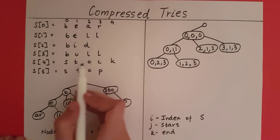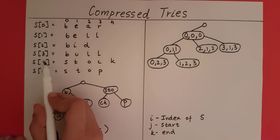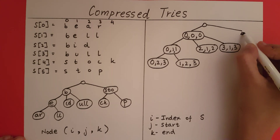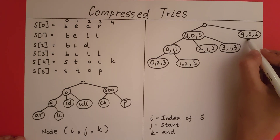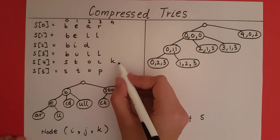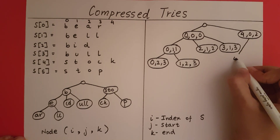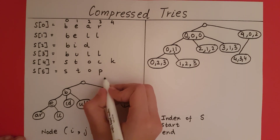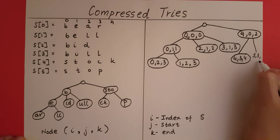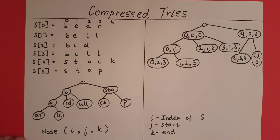Now for STO: it belongs to stock which is at index 4, starts at 0, ends at 2, so (4, 0, 2). Then CK belongs to index 4, starts at 3, ends at 4, so (4, 3, 4). Then P belongs to index 5, starts at 3, ends at 3, so (5, 3, 3). This is how we represent the compressed trie, given that the words are stored in an array S. So this is how we create a compressed trie out of a standard trie and represent it.